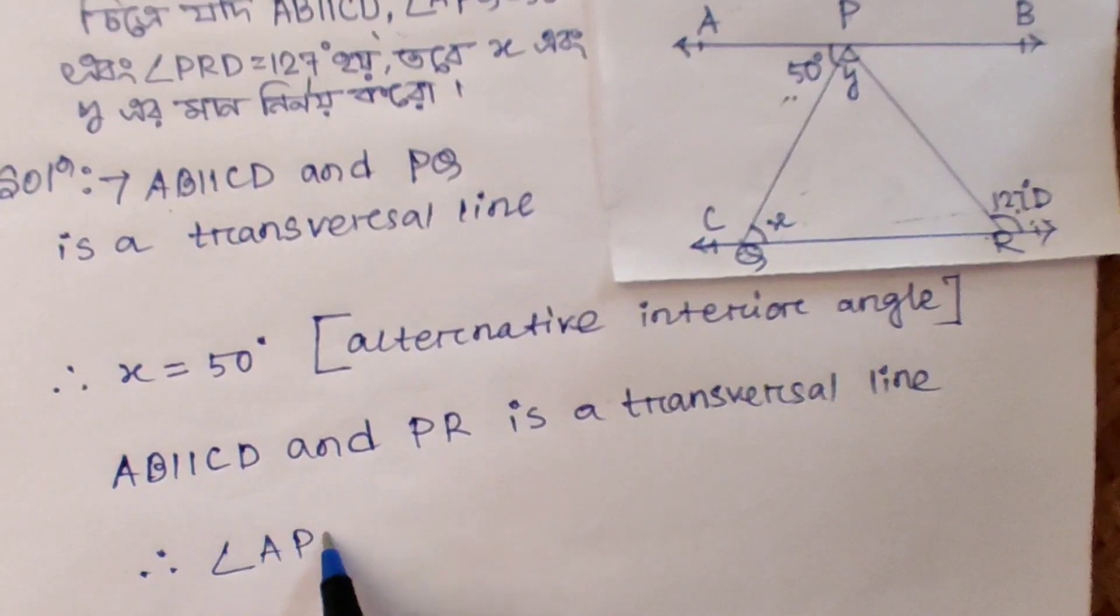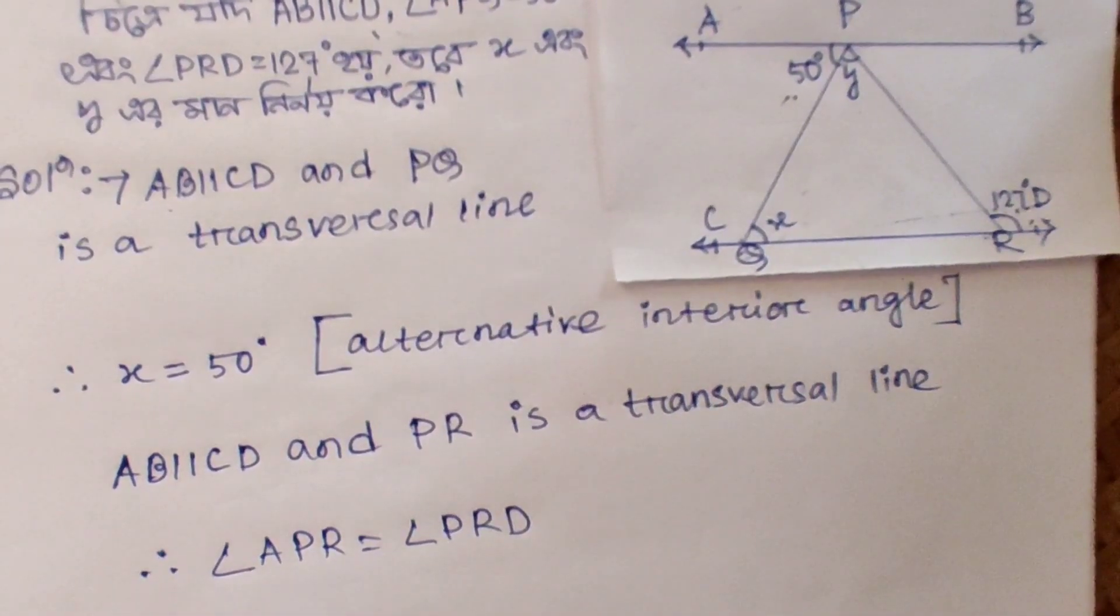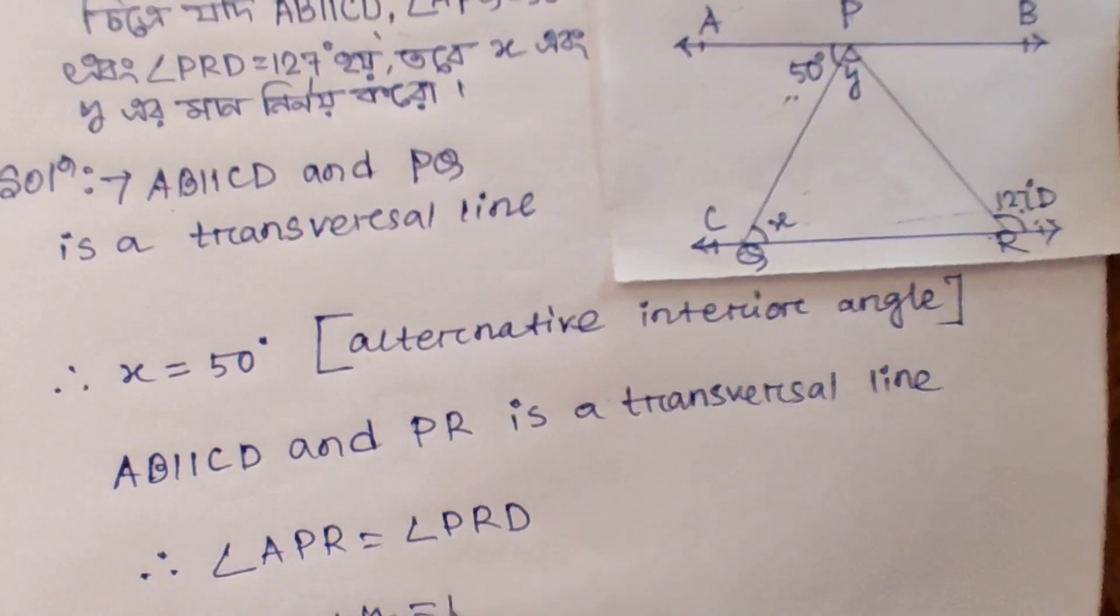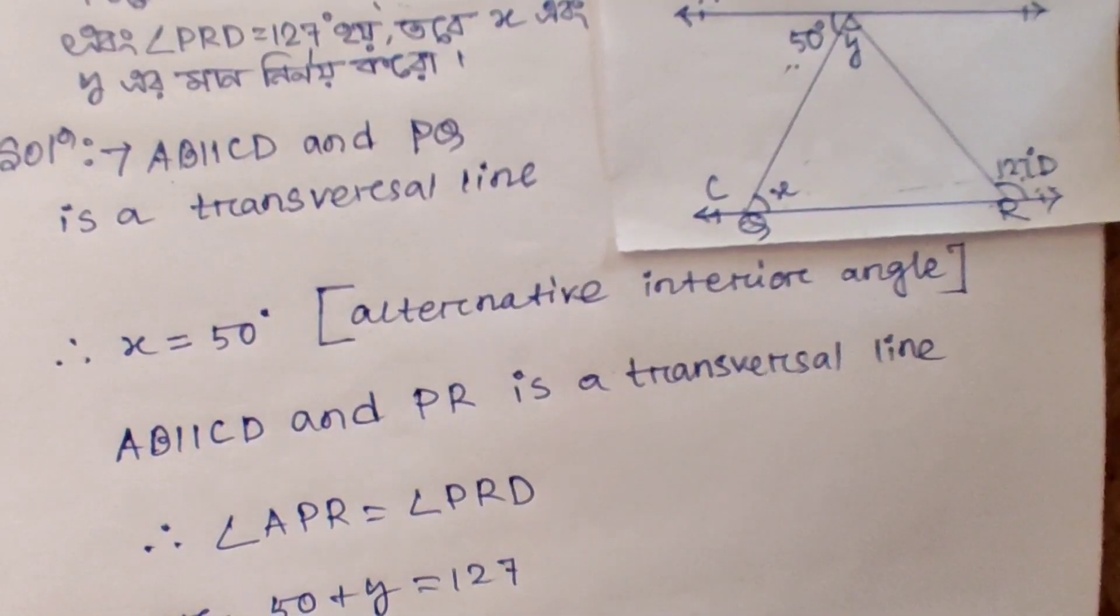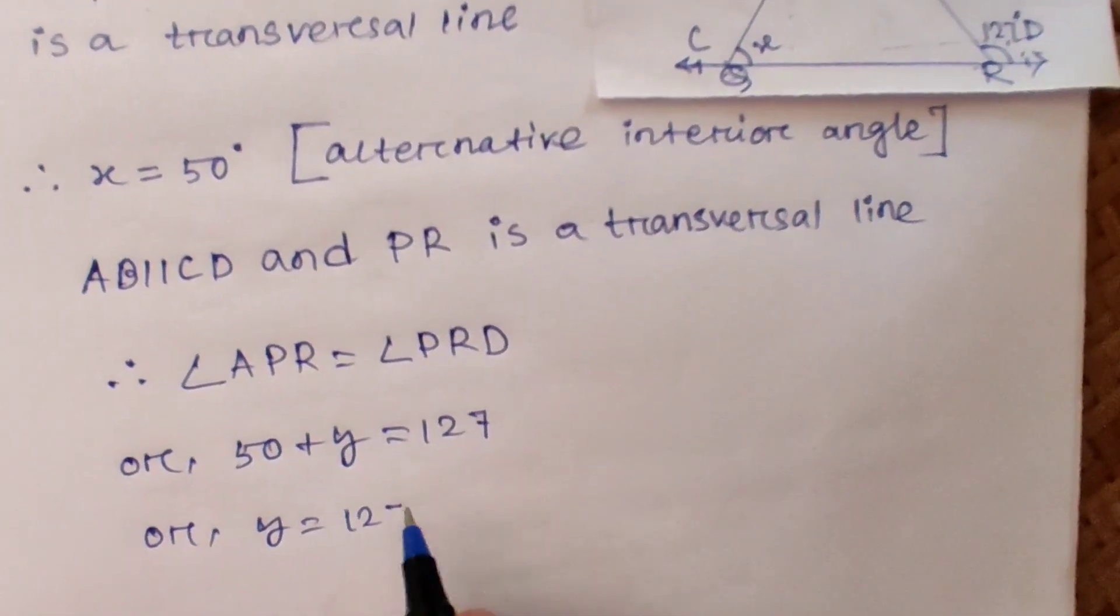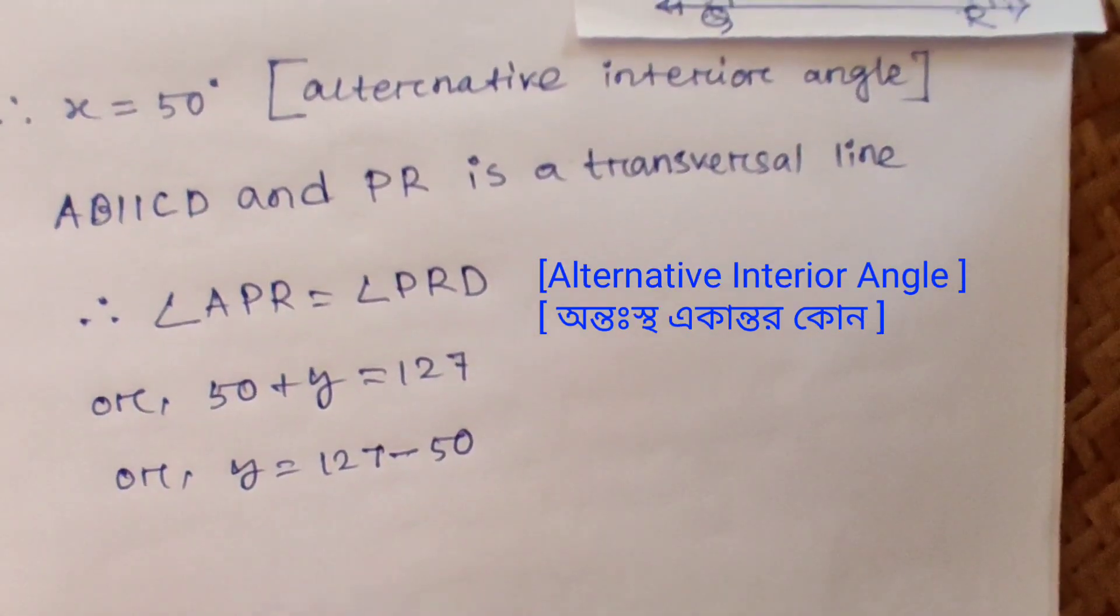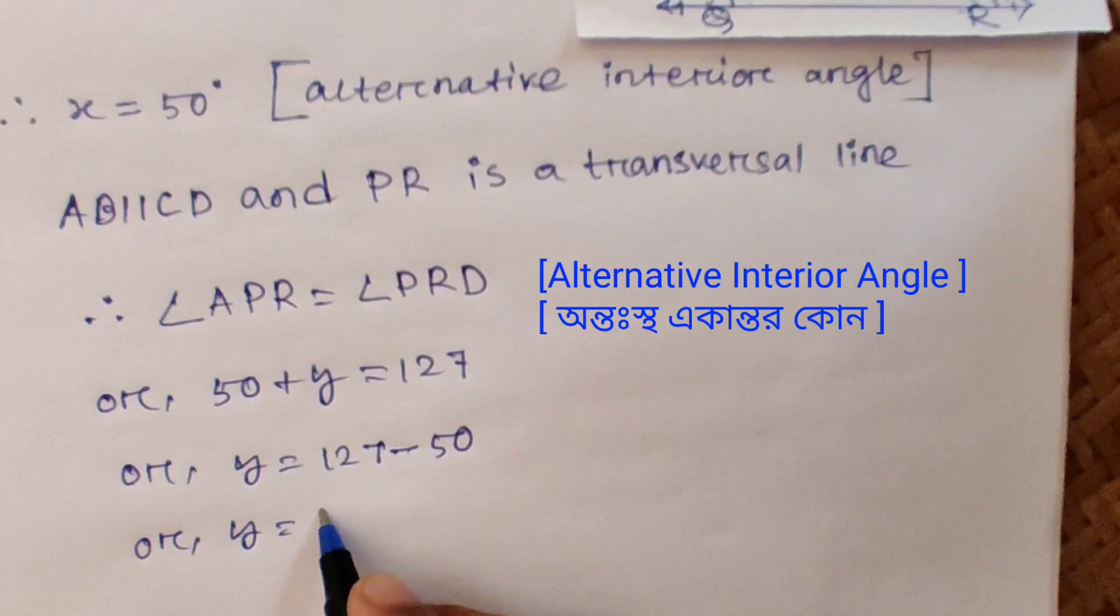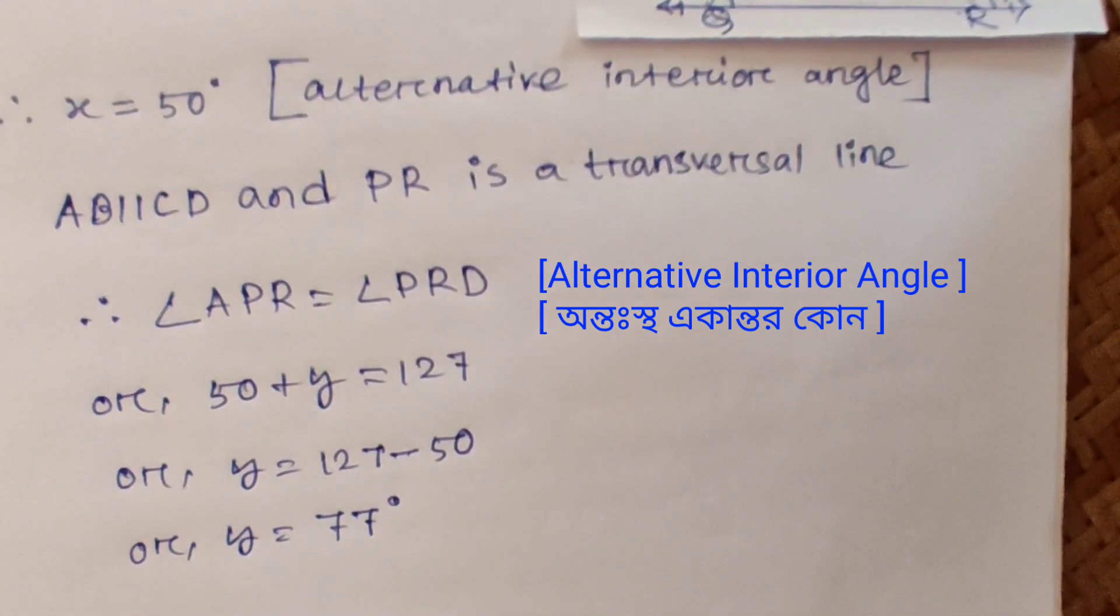Therefore, angle APR equals angle PRD, or 50 plus y equals 127, or y equals 127 minus 50, or y equals 77 degrees.